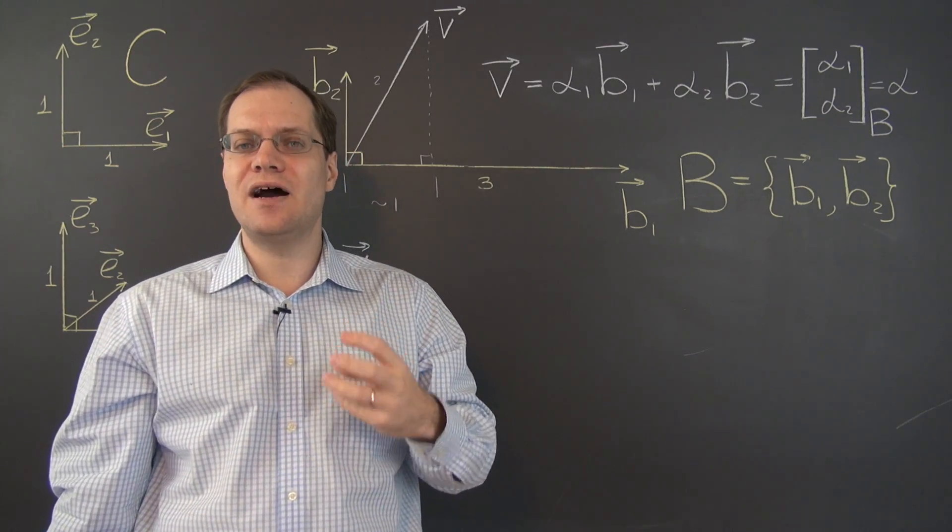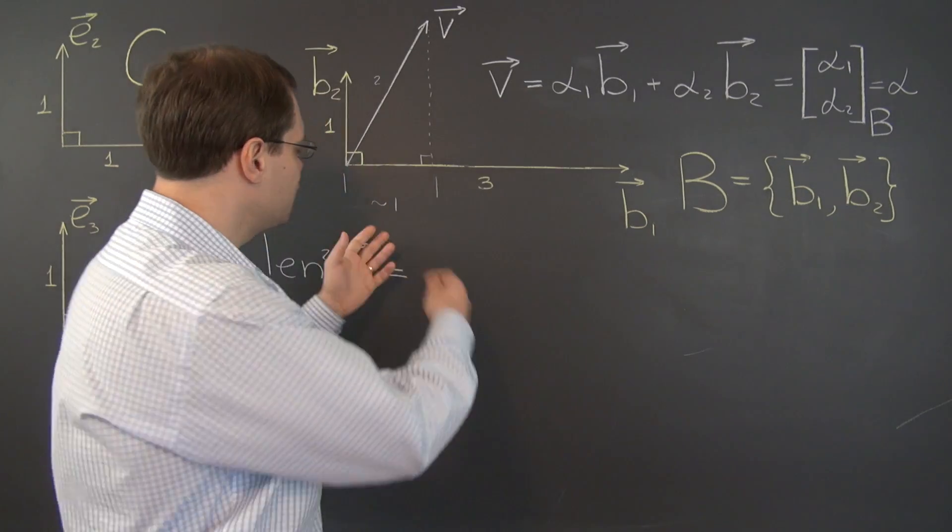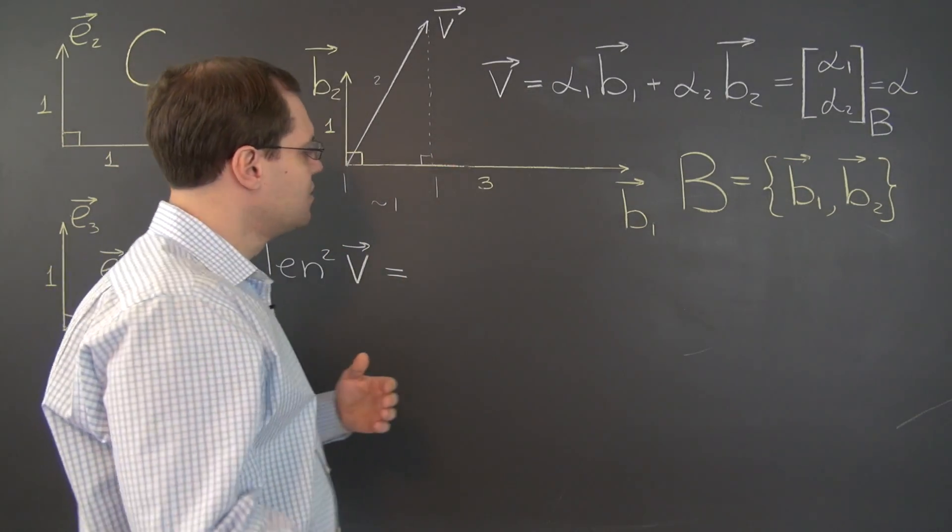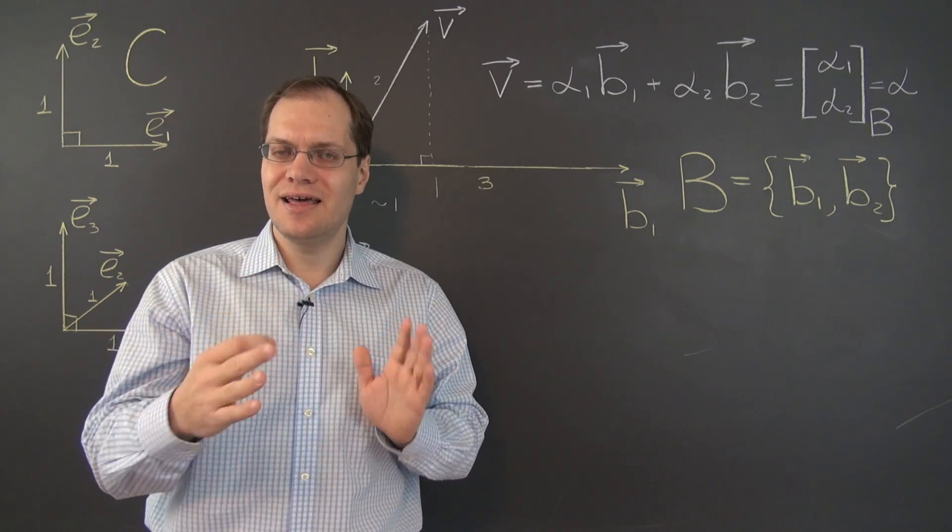So alpha 1 is now a smaller number than it was before. Before it would have been close to 1, just under 1, but now it's just under one third. So it scales in that way.